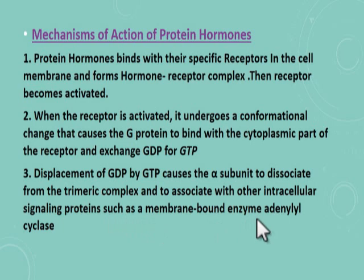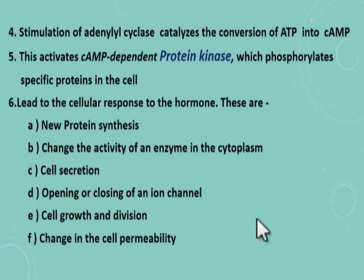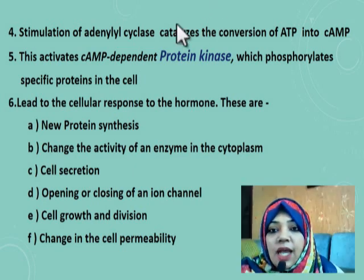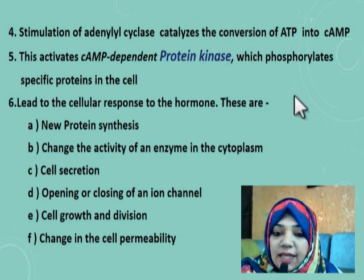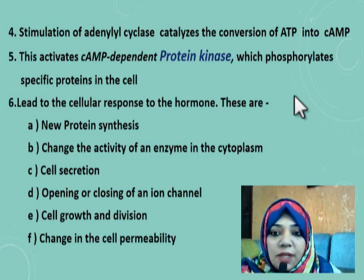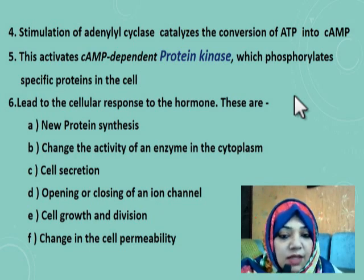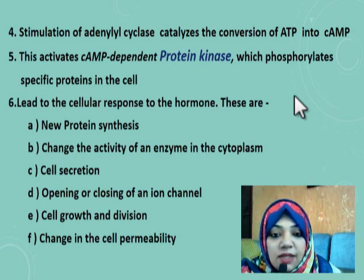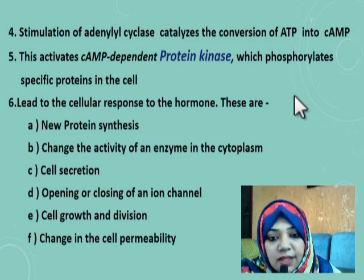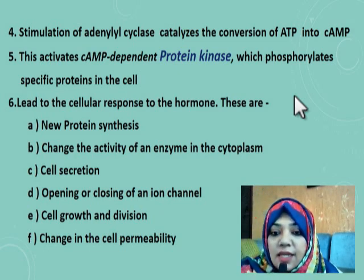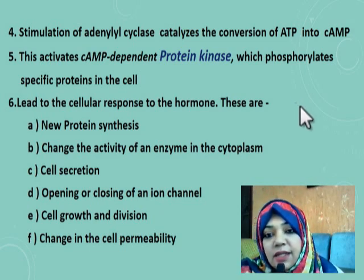The stimulation of adenylyl cyclase catalyzes the conversion of ATP into cyclic AMP. This activates the cyclic AMP dependent protein kinase, which phosphorylates specific proteins in the cell, leading to the cellular response to the hormone. Cellular responses can include new protein synthesis, change in activity of an enzyme in the cytoplasm, cell secretion, opening and closing of an ion channel, cell growth and division, and change in cell permeability.